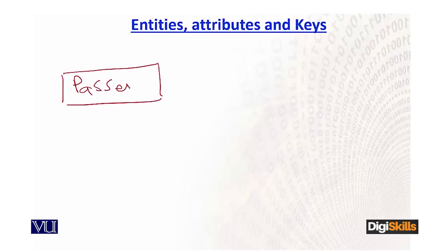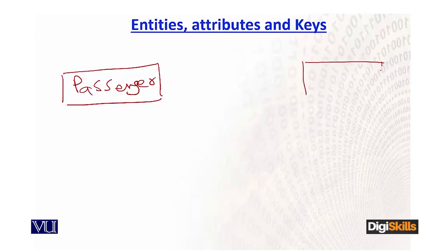So the rule we establish here is: the primary key of the 'one' side table will come into the 'many' side table as a foreign key. This is a rule we cannot miss out on. For example, let's take an entity called 'passenger' in a ticketing management system.